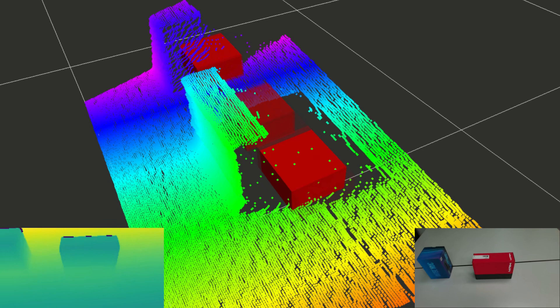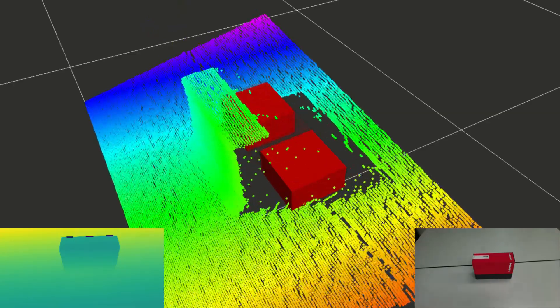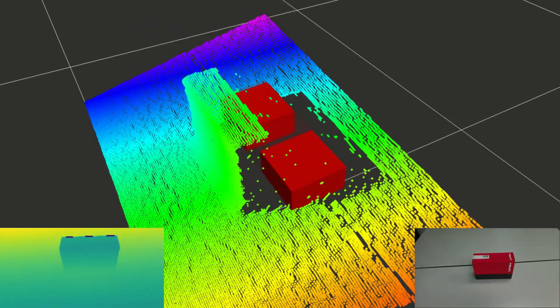We now remove one obstacle and reveal that the target object is not hidden behind it. The particle distribution collapses and only the particles behind the second obstacle remain.